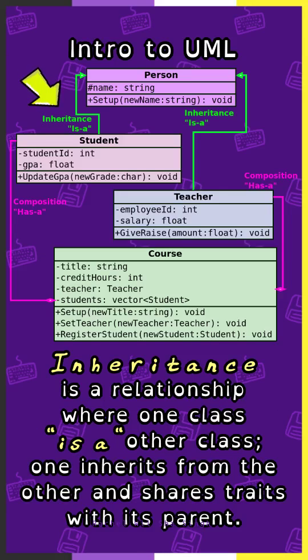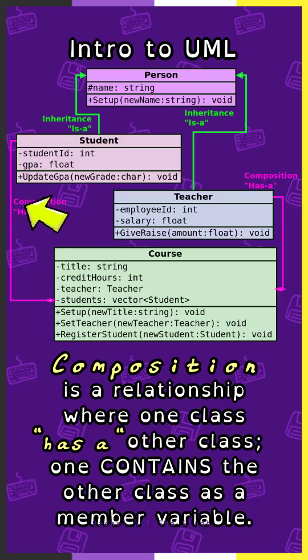Inheritance is a relationship where one class 'is a' other class — one inherits from the other and shares traits with its parents. Composition is a relationship where one class 'has a' other class — one contains the other class as a member variable.